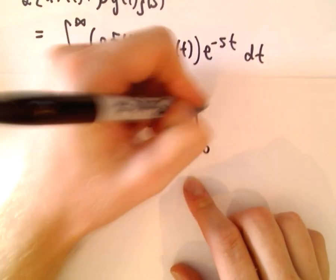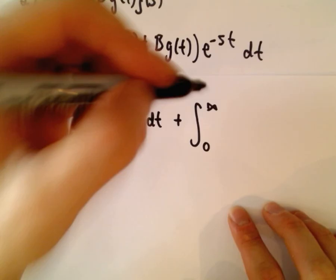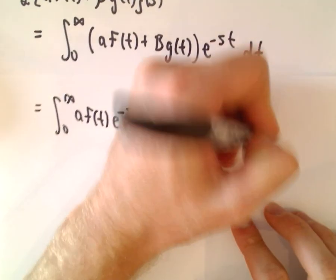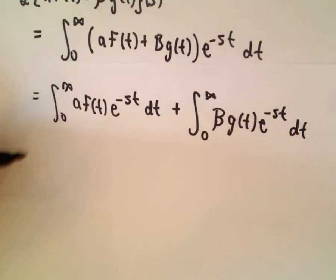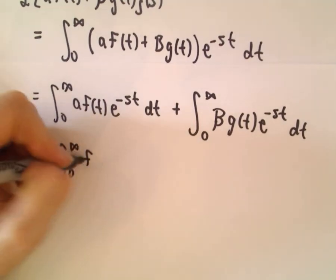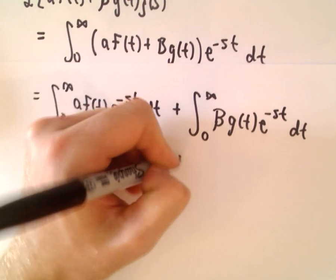And again, I'm just going to bust it up. So 0 to infinity, when I distribute the e to the negative s t to the second term, we'll get the g of t e to the negative s t dt. And now we can simply pull the a out, it's just a constant. Do the same thing on the other one, just pull the b out.